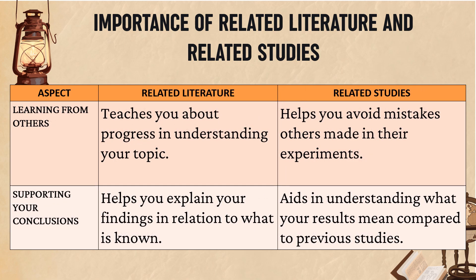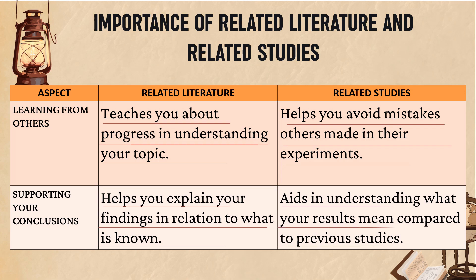Learning from others: related literature teaches you about progress in understanding your topic, while related studies help you avoid mistakes others made in their experiments. Supporting your conclusions: related literature helps you explain your findings in relation to what is known, while related studies aid in understanding what your results mean compared to previous studies.